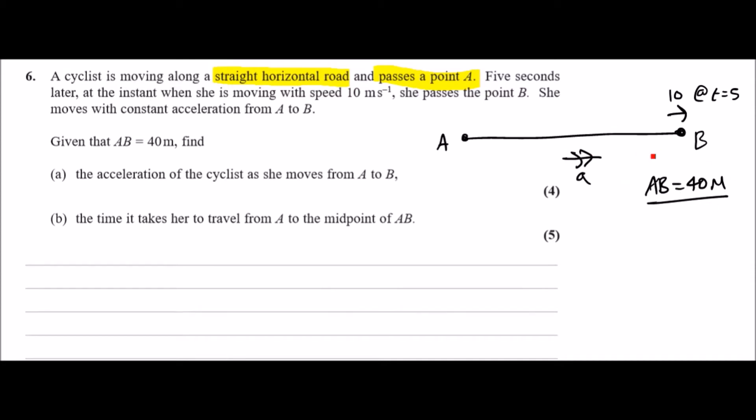We need to think what SUVAT equations we have here. We need to find what a is. We know the distance is 40, so s is 40. We also know the final speed at B is 10, and the time taken was 5.